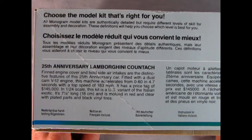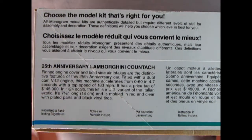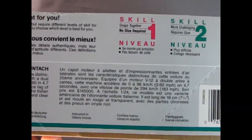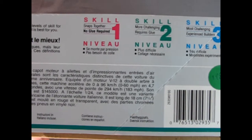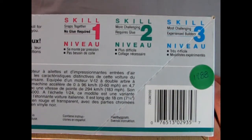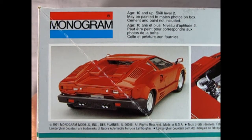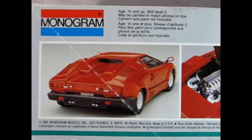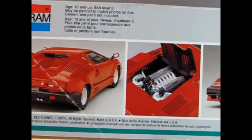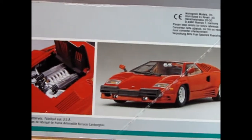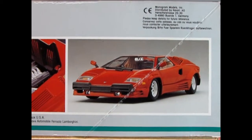On this side of the box we get a little bit of a history of our 25th anniversary Lamborghini Countach right down here and if we move the box across it says to choose the model kit that's right for you and shows skills levels 1, 2, and 3. Then like it said on the top of the box this is a skill level 2 kit. Turning the box to the other side we can see this nice rear three-quarter view shot of our Lamborghini as well as the mid engine which is under that little compartment there and then there we have the front three-quarters of our Lambo.